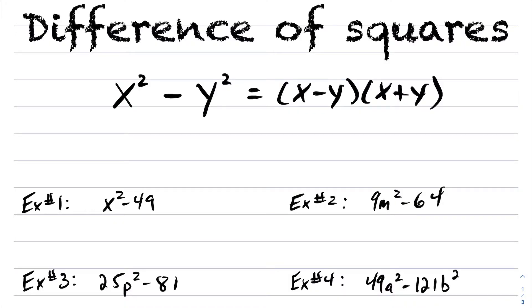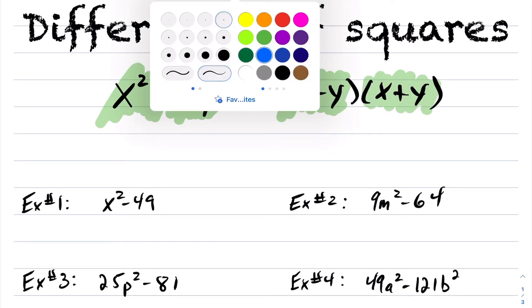Okay, so we're going to be taking a look at difference of squares. With difference of squares here, what we have is if you ever have x² - y², that'll factor into (x - y)(x + y), or likewise (x + y)(x - y).